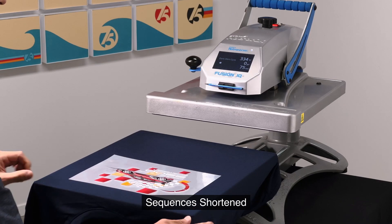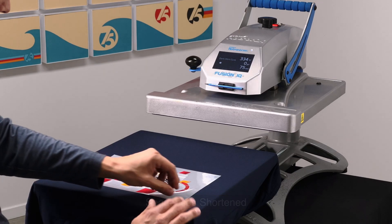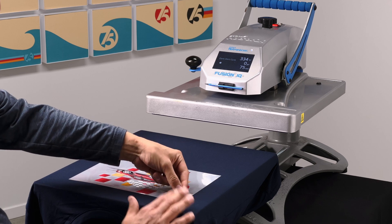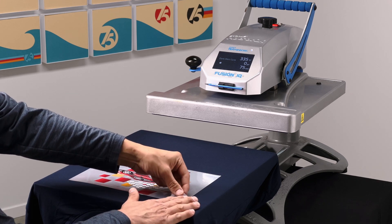When the pressing is complete, we'll allow the garment to lightly cool, hold the garment down in one corner, and begin peeling from one corner of film to the other.